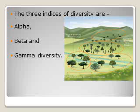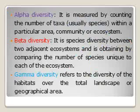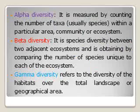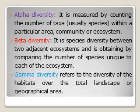Beta diversity is the difference between two habitats — for example, between grassland and forest, or aquatic and terrestrial. The species richness difference between these two communities is beta diversity. Gamma diversity is the overall landscape — one biogeographical area or region — and the species found across that entire area constitute gamma diversity.